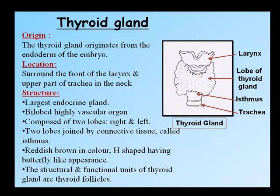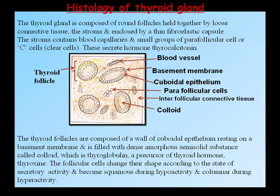Thyroid gland: it originates from the endoderm of the embryo and is located surrounding the front of the larynx and upper part of the trachea in the neck. It is the largest endocrine gland — a bilobed, highly vascular organ with two lobes joined by connective tissue called the isthmus; reddish-brown, H-shaped, with a butterfly-like appearance. The structural and functional units are thyroid follicles — round follicles held together by loose connective tissue (stroma) enclosed in a thin fibro-elastic capsule. The stroma contains blood capillaries and parafollicular cells (C cells) that secrete thyrocalcitonin. Follicles are composed of cuboidal epithelium filled with colloid (thyroglobulin), a precursor of thyroxin.